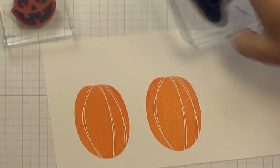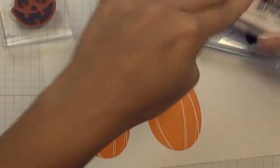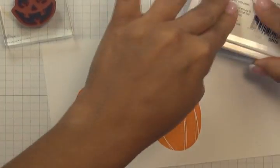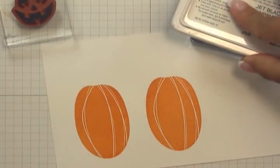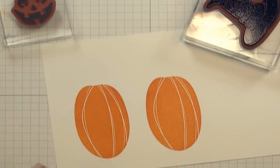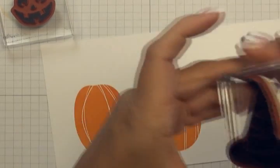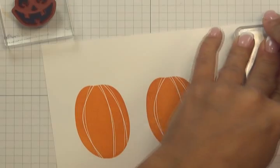I'm then going to take the hat and ink that up in black ink. Now I'm using Jet Black Archival ink. You can also use the Jet Black Stazon ink as well. I'm inking that up and I'm stamping that onto my scrap.